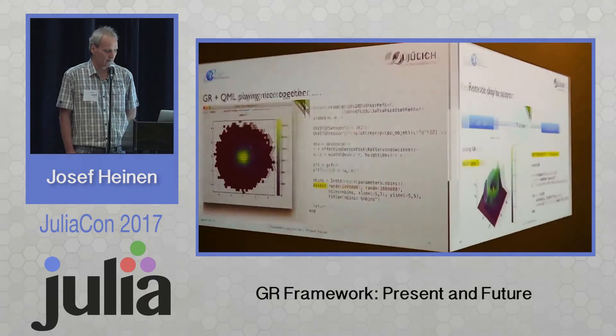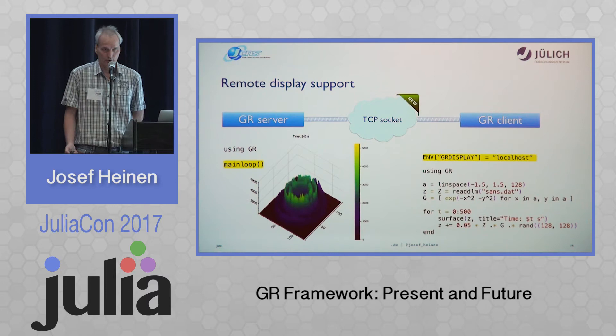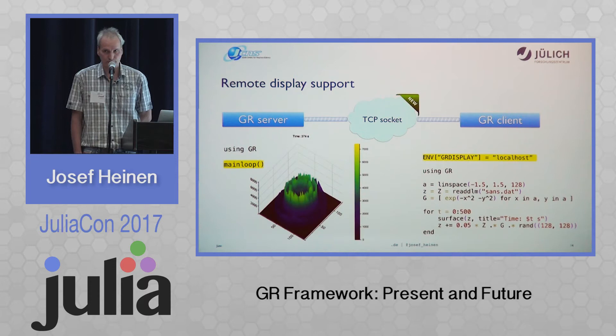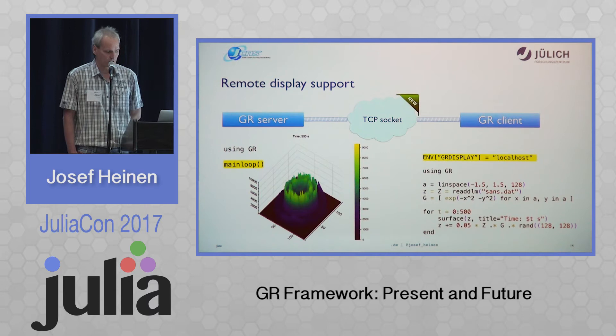We also have a new feature: remote display support. Suppose you have access to a supercomputer and you want to create powerful three-dimensional graphics on your local desktop. You can set up a socket connection from GR without any X display or other protocol that would slow down the connection. The complete GR stream is serialized over a TCP socket stream and then displayed on the server side. You simply call the main loop and it will accept every connection from a remote display.